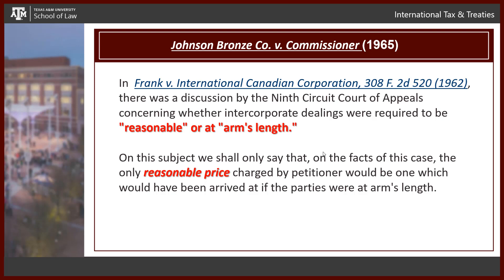In our final slide for Johnson Bronze, the judge cites the Frank case — the zombie case I mentioned at the start of the lecture. The judge cites the 1962 Frank case: there was a discussion by the Ninth Circuit Court of Appeals concerning whether the intergroup dealings must be 'reasonable' or 'at arm's length' — clearly two different standards of which to evaluate whether the income reflects true income. Johnson Bronze itself is confused: the judge cites 'fair or arm's length' a couple paragraphs back, and here states, citing Frank, 'reasonable or at arm's length.'